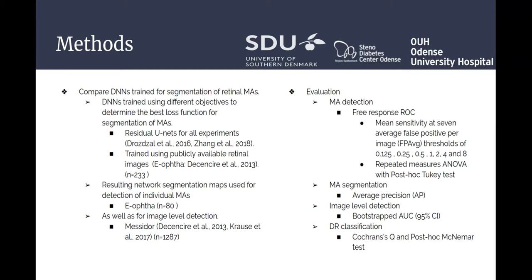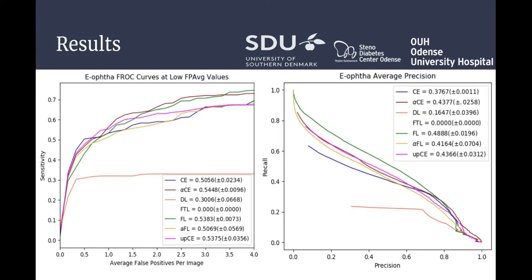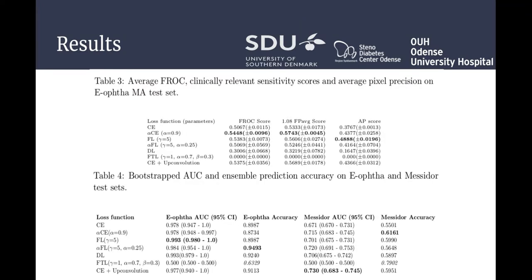Here we see the results of training the networks using different objective functions, for MA detection on the left and MA segmentation on the right. Generally, we see that the losses based on cross-entropy perform better than both the Dice loss and the focal Tversky loss. Looking more closely, we see that weighted cross-entropy achieves the highest FROC score, as well as the highest sensitivity at a 1/8 false positive per image threshold. We see that focal loss achieves the highest average precision score for MA segmentation. Looking at the bootstrapped AUC scores, we see that focal loss achieves the highest AUC on the E-Optic images, while a network trained using cross-entropy performs best on the Mesidor dataset.